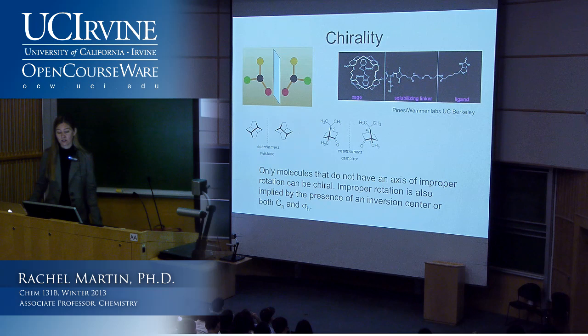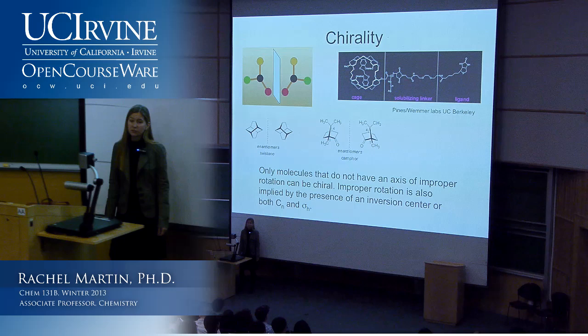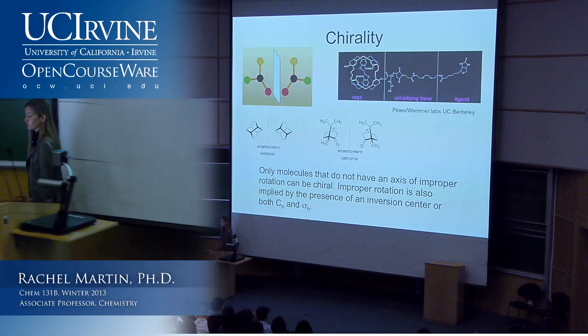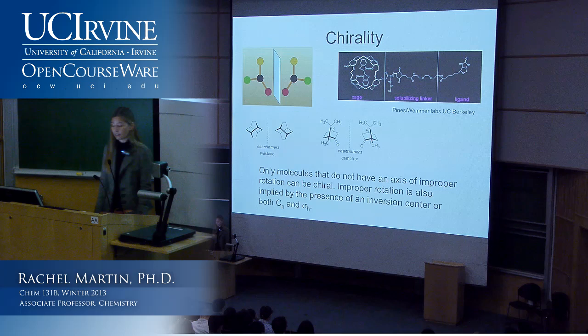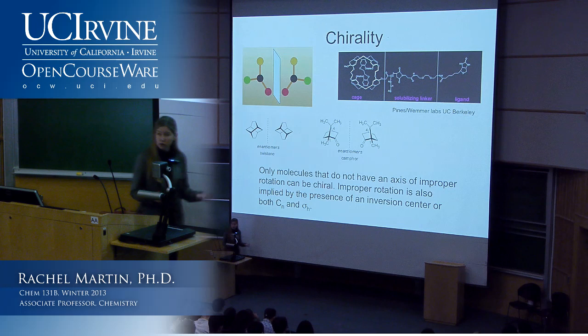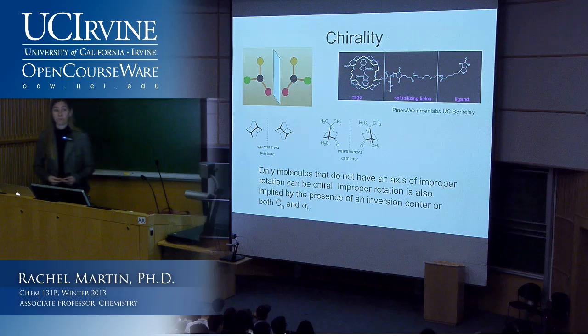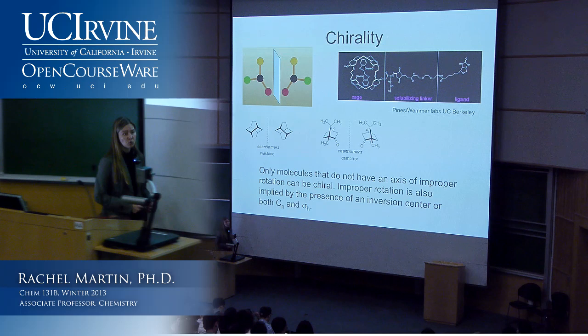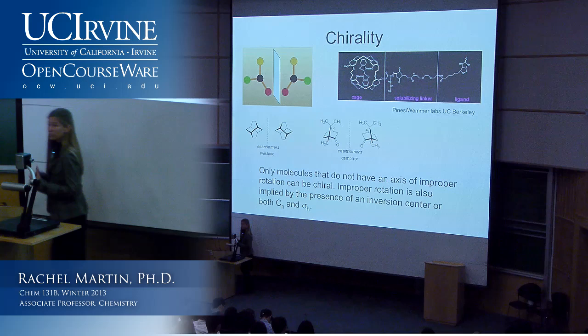Now we get to some consequences of symmetry. Chirality has to do with whether molecules are left-handed and right-handed. Only molecules from some specific point groups can be chiral—specifically, only molecules that don't have an S axis can be chiral. That's also implied by having an inversion center: if you can invert it, it's not chiral. If it has both a CN axis and a horizontal plane, it also can't be chiral. This is just a different way of saying things you already know—chemists at this stage definitely know how to tell which molecules are chiral; this is just a different formalism for talking about it.